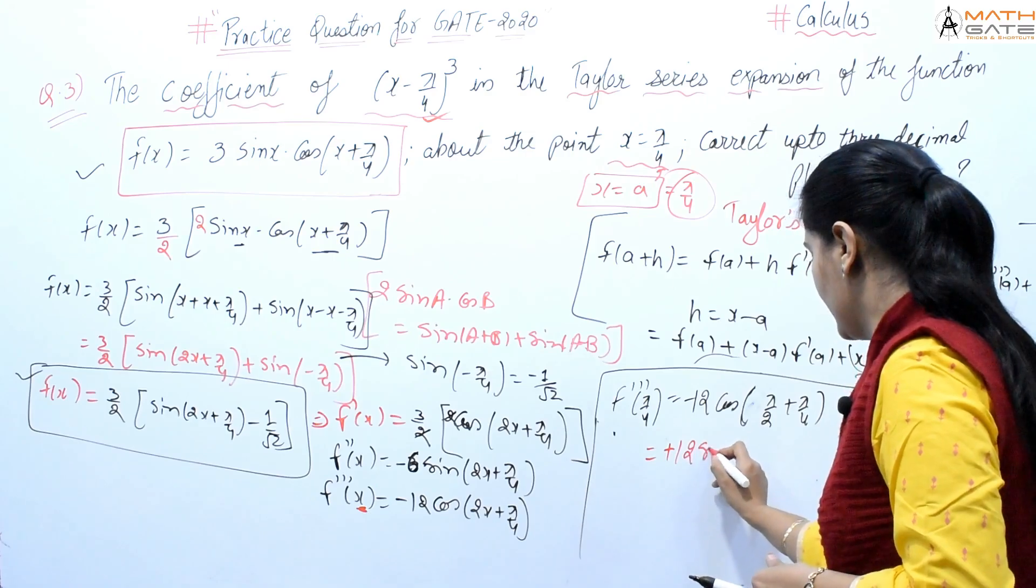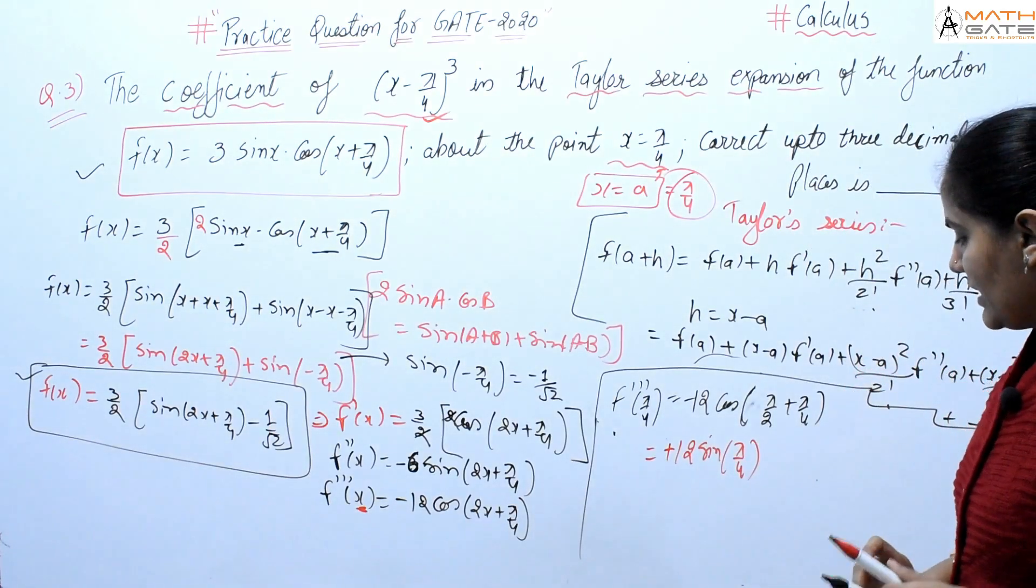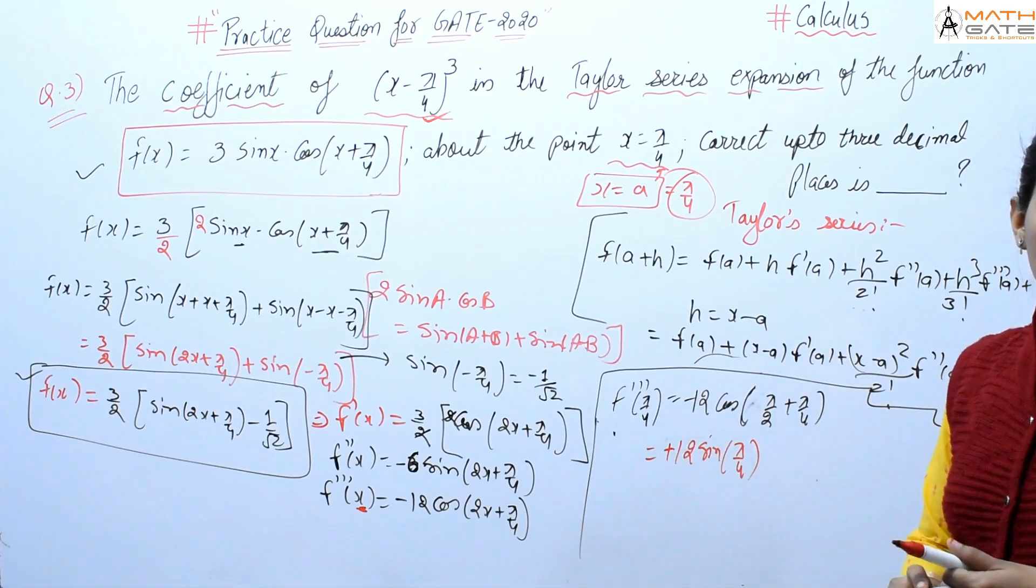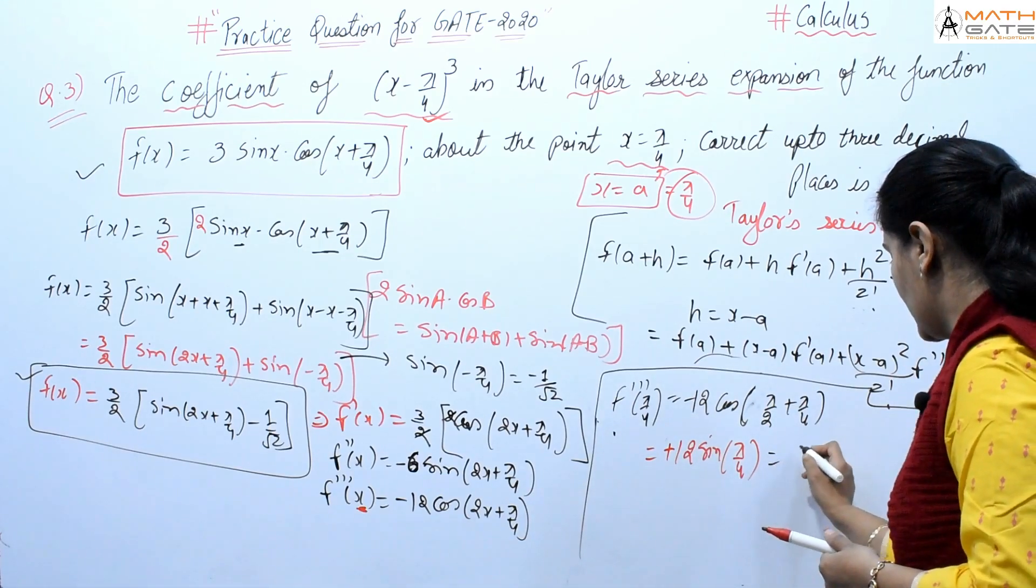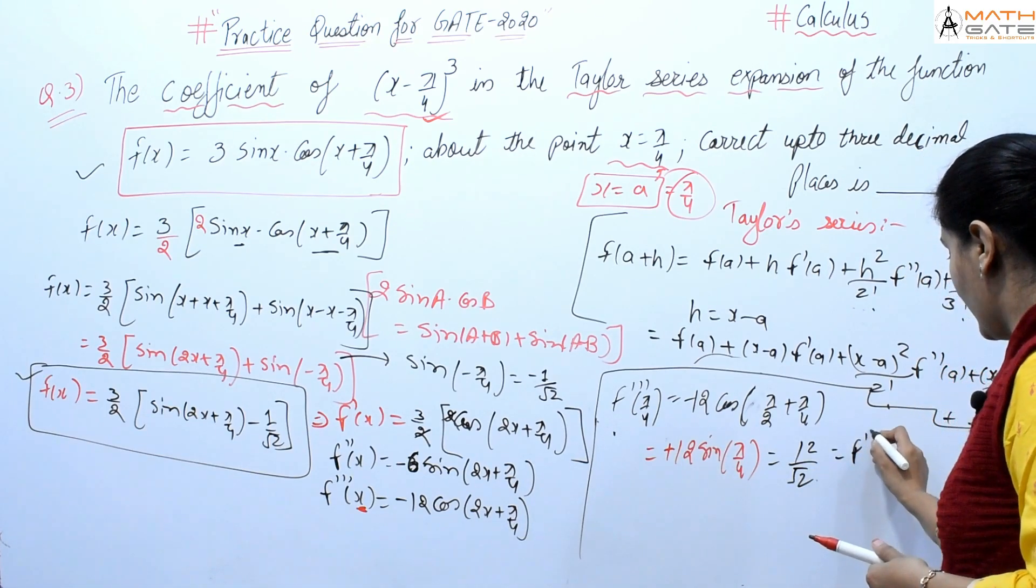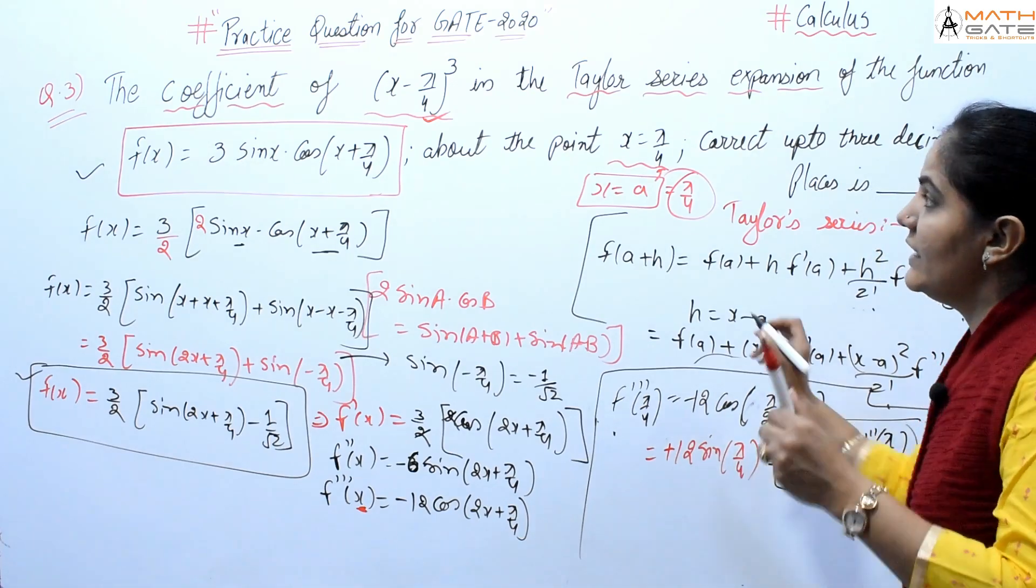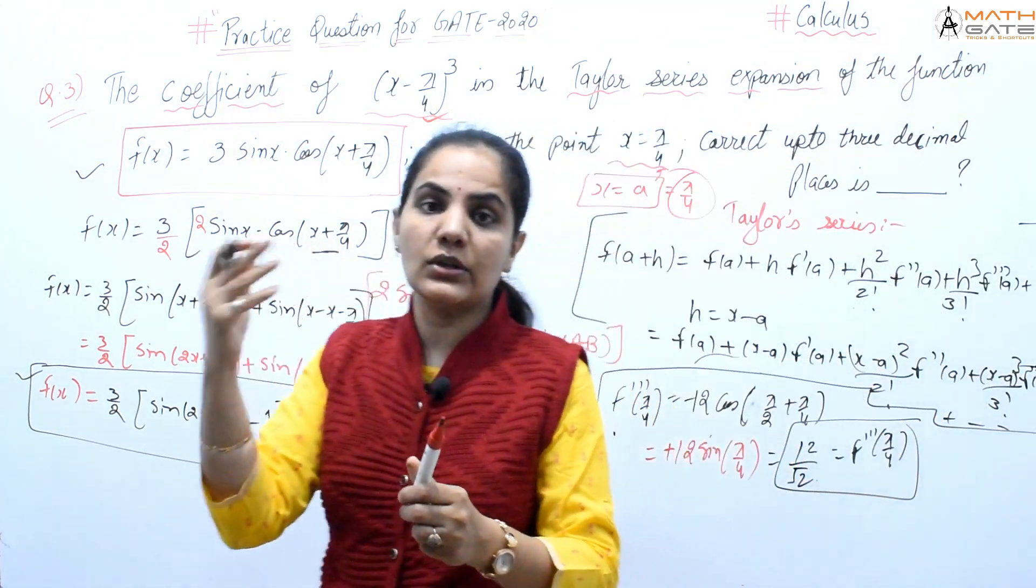Since sin(π/4) = 1/√2, this value is 12/√2, which is f'''(π/4).